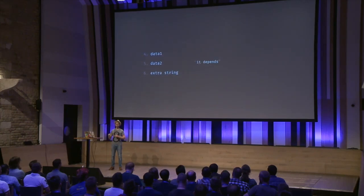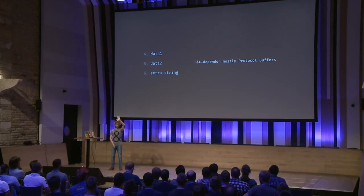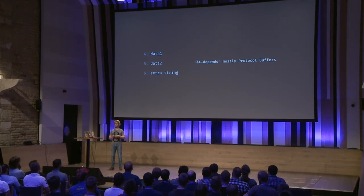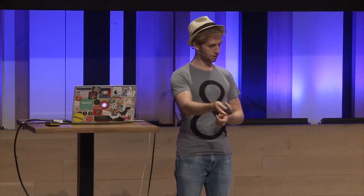The other thing is data and extra string. What's inside? It depends, but mostly it's protocol buffers. For those that don't know: imagine a JSON-ish format that has a well-defined schema — so it's type-safe — and it's encoded in a binary format which is very efficient. You read these bytes through some code-generated adapters and you get back the information. That's what's inside.